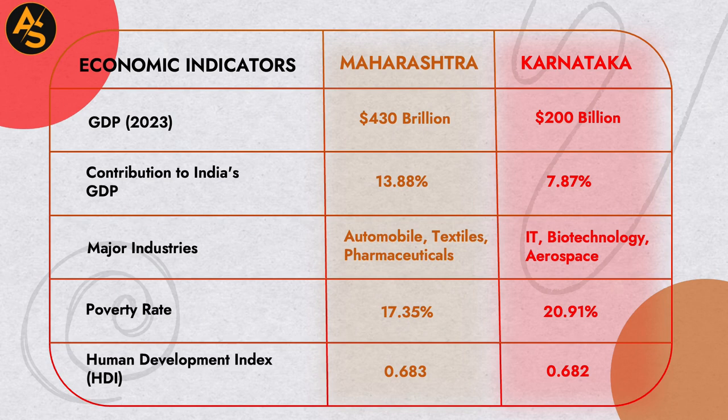Economic indicators for 2023: GDP — Maharashtra 430 billion dollars, Karnataka 200 billion dollars. Contribution to India's GDP — Maharashtra 13.88%, Karnataka 7.87%. Major industries: Maharashtra — automobiles, textiles, pharmaceuticals; Karnataka — IT, biotechnology, aerospace. Poverty rate: Maharashtra 17.35%, Karnataka 20.91%. Human Development Index: Maharashtra 0.683, Karnataka 0.682.